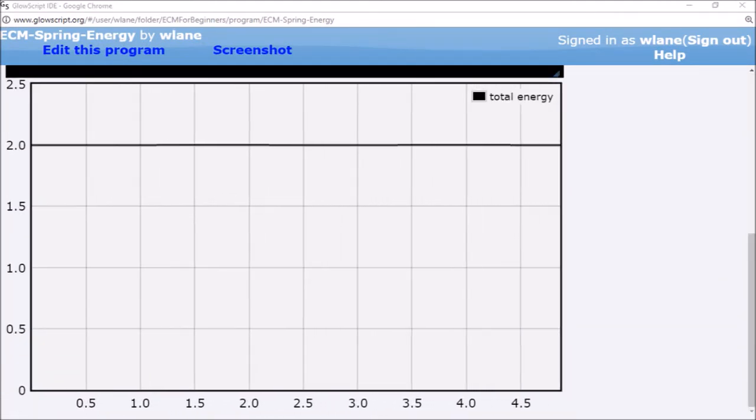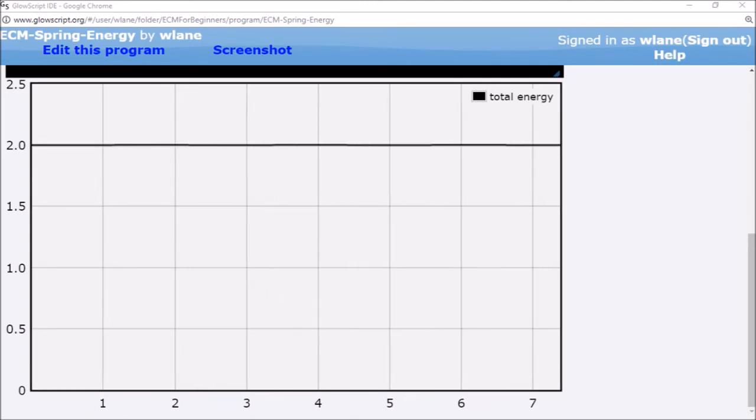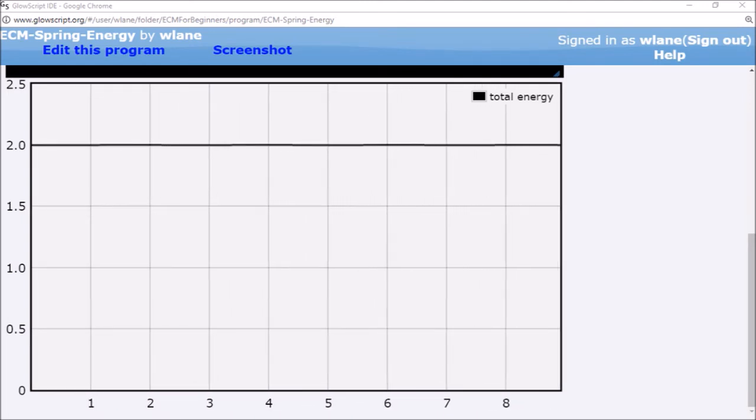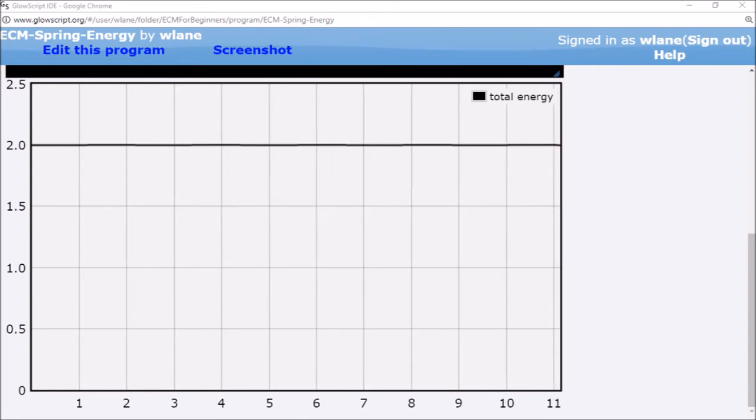If the graph of total energy had not become flatter, we would know that there was something wrong in our simulation. But since the total energy remains constant, we can have confidence in our results.